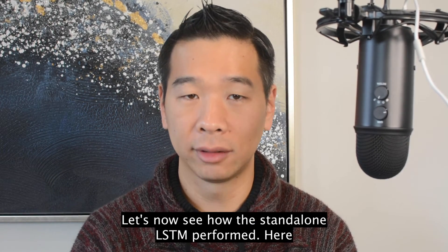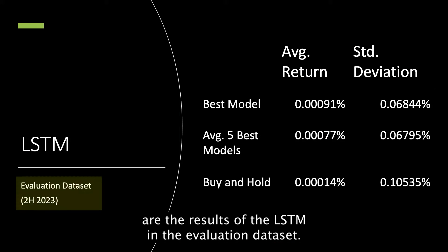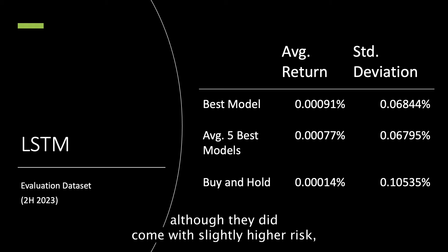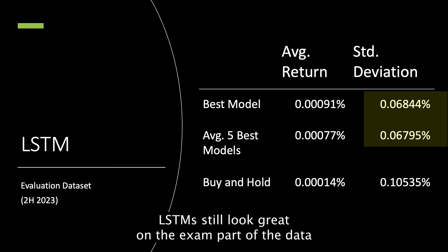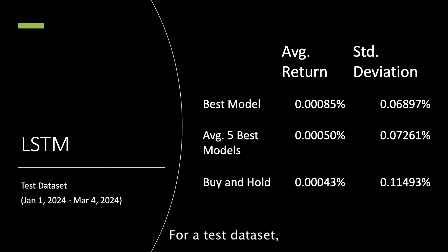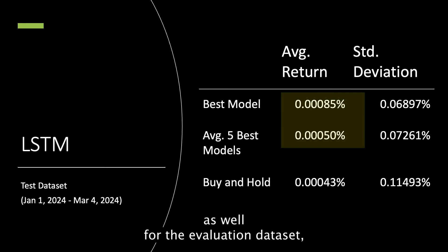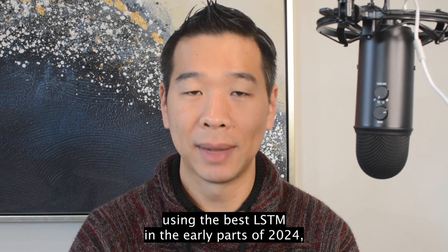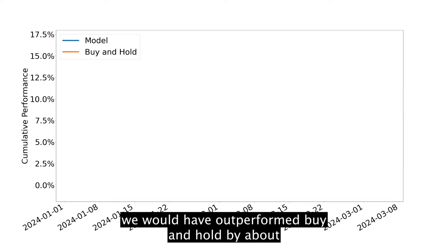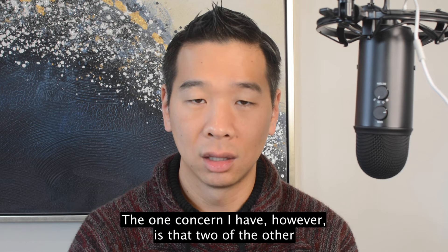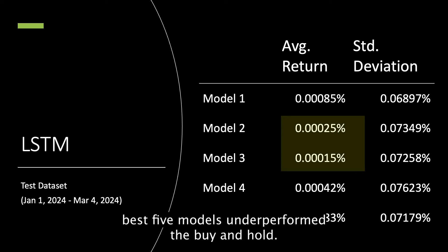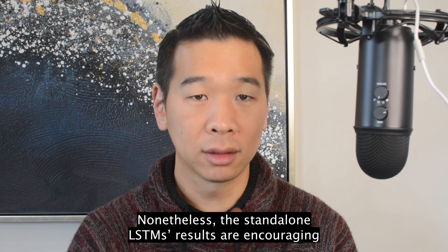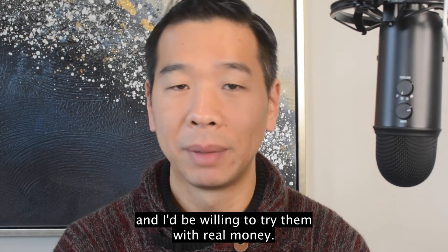Let's now see how the standalone LSTM performed. Here are the results of the LSTM in the evaluation dataset. The average returns of the best LSTM model are almost double that of the convolutional neural nets, although that did come with slightly higher risk. LSTM still looked great on the exam part of the data. For the test dataset, the models didn't perform as well as on the evaluation data, but the average returns still beat buy-and-hold with similar standard deviations. If we had traded using the best LSTM in the early parts of 2024, we would have outperformed buy-and-hold by about 8% cumulatively. The one concern is that two of the other best models underperformed buy-and-hold, leaving open the chance that the good performance is a fluke. Nonetheless, the standalone LSTM's results are encouraging, and I'd be willing to try them with real money.